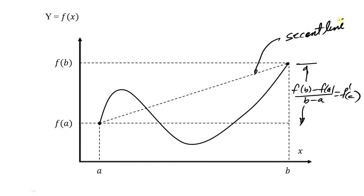In this particular illustration, it looks like there would be exactly two places where the slope of the tangent line would be equal to the slope of the secant line.